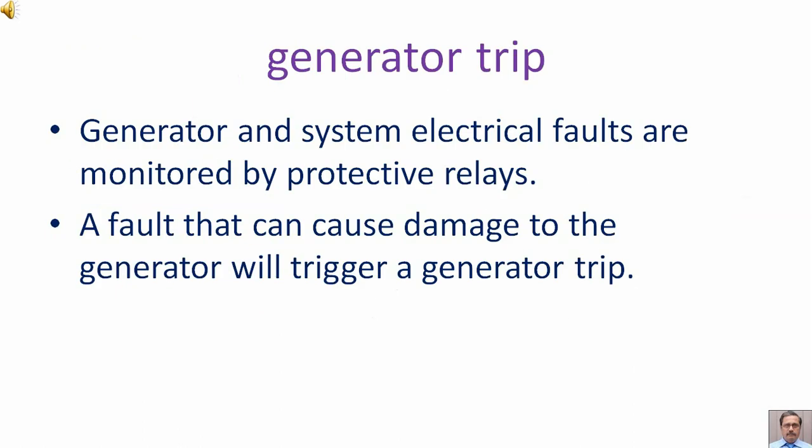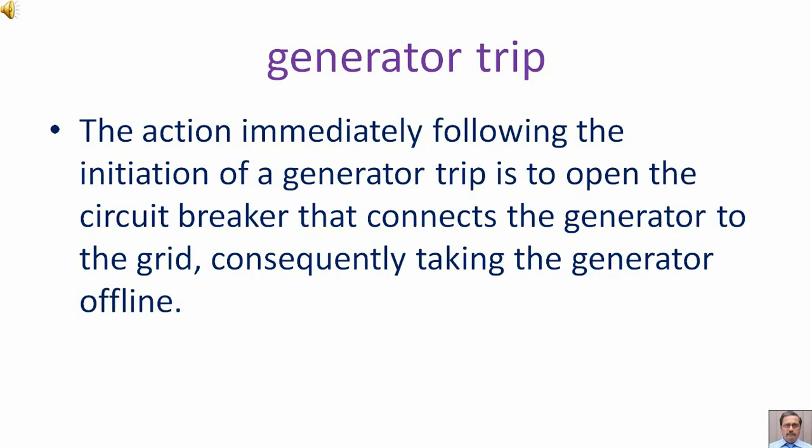Generator trip. Generator and system electrical faults are monitored by protective relays. A fault that can cause damage to the generator will trigger a generator trip. The action immediately following the initiation of a generator trip is to open the circuit breaker that connects the generator to the grid, consequently taking the generator offline.